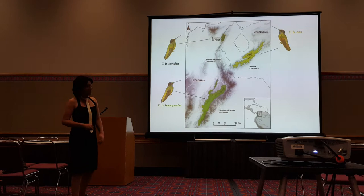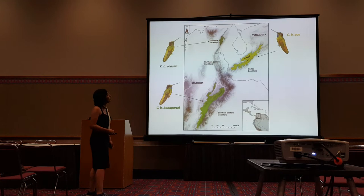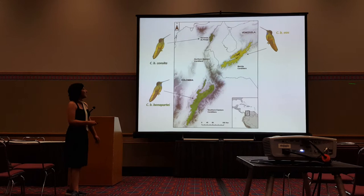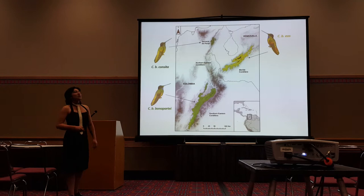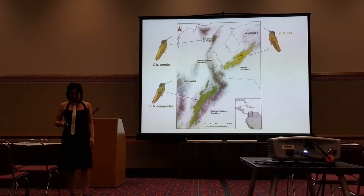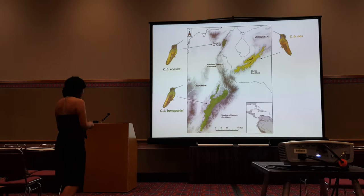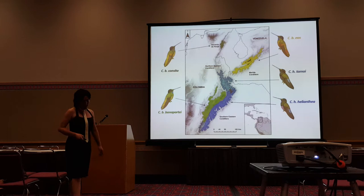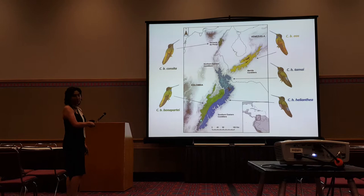I say 'complete' because actually there are subspecies. This is the distribution of the CB subspecies: we have Concita in the eastern mountain range of the Colombian Andes, Concita in the north in the Serranía de Perijá, and Eos in the Serranía de Mérida in Venezuela — some authors consider Eos a different species, but currently it is still classified as a subspecies. For CH, there are two subspecies: Tamai and Hilianta, both in the Colombian Andes. There is a zone of contact between the two species.